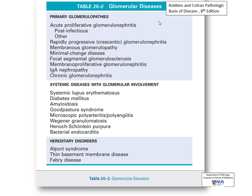When we talk about glomerular diseases, we have the primary glomerulopathies, systemic diseases with glomerular involvement, and hereditary disorders. For primary glomerulopathies, you'll hear about acute proliferative glomerulonephritis — especially post-infectious, usually post-streptococcal. Then rapidly progressive or crescentic glomerulonephritis, membranous glomerulopathy, minimal change disease, focal segmental glomerulosclerosis, membranoproliferative glomerulonephritis, and IgA nephropathy. Chronic glomerulonephritis is actually a mixed bag or spectrum of conditions.